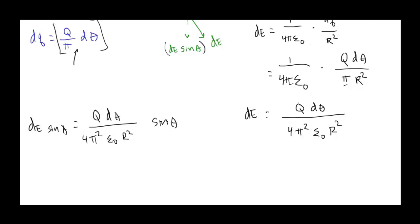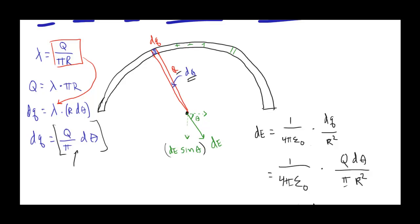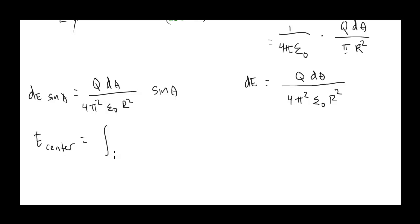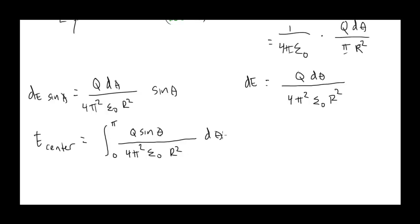To find the electric field at the center, I have to integrate all these little elements dθ. The electric field at the center is the integral of this expression. We have to be careful about the limits: it's a semicircle, so we integrate from 0 to π — not 0 to 2π since it's not a full circle. So E at the center equals the integral from 0 to π of Q sinθ over 4π²ε₀R² dθ.